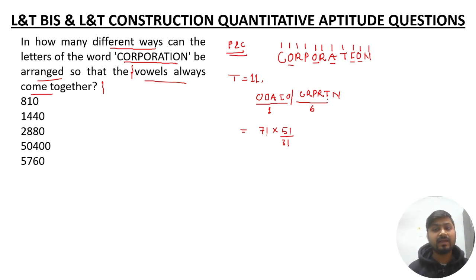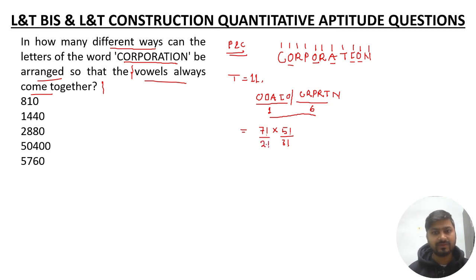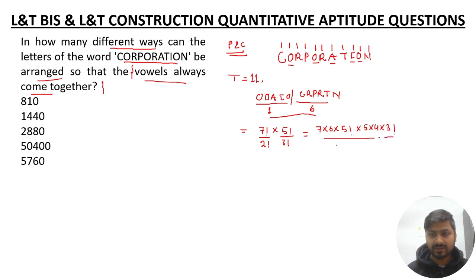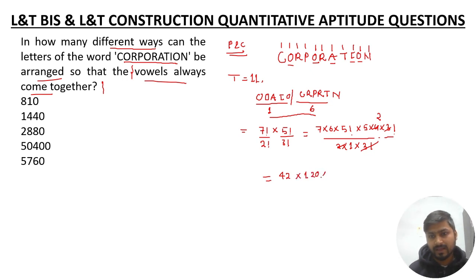The 5 vowels within their group can be arranged in 5 factorial ways, but O repeats 3 times so we divide by 3 factorial. Among the consonants, R repeats twice so we divide by 2 factorial. The total arrangements = 7! × 5! / (3! × 2!) = 5040 × 120 / (6 × 2) = 604800 / 12 = 50400. So the answer is 50400.